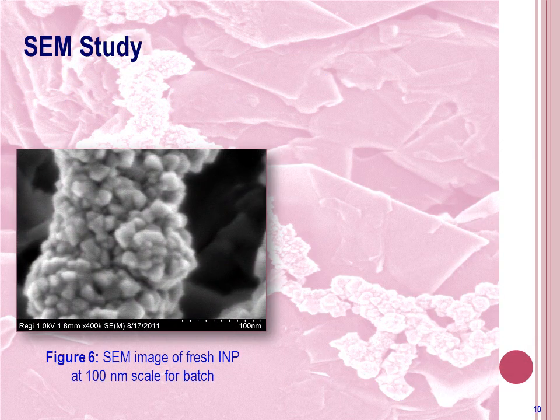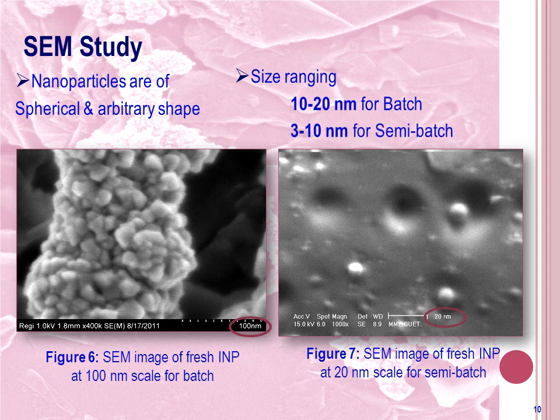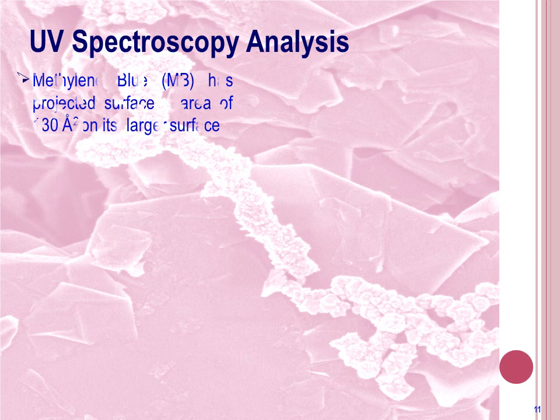AFM study was carried out for both batch and semi-batch INP. The images showed the presence of spherical and arbitrarily shaped particles in the INP sample. For INP produced by the batch procedure, the particles were found in the 10–20 nm size range by magnifying at 100 nm scale, while this size was 3–10 nm for semi-batch INP by magnifying at 20 nm scale. In UV spectroscopy analysis, the surface area of the particle was measured by observing adsorption of methylene blue on the particle surface.